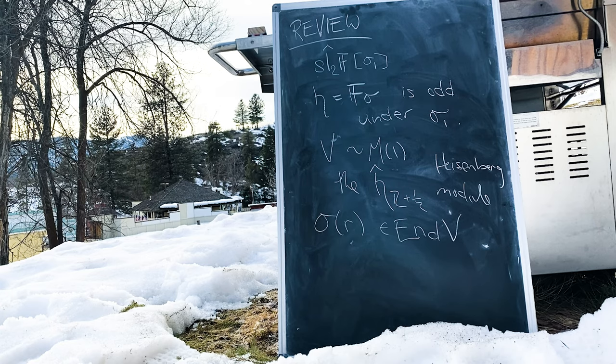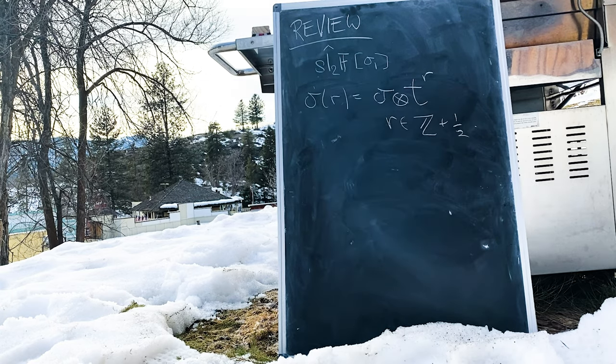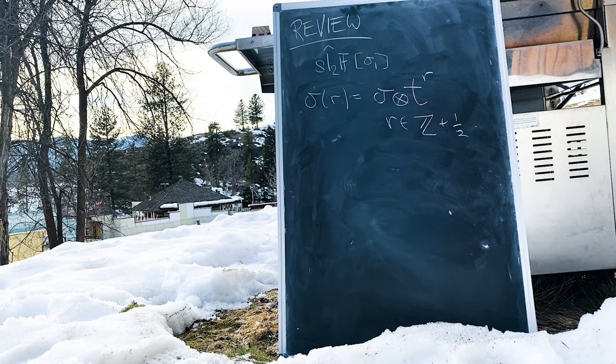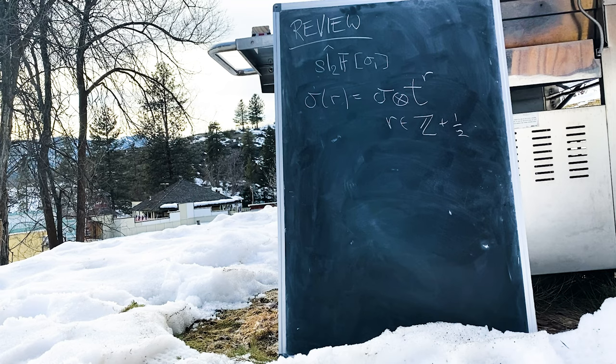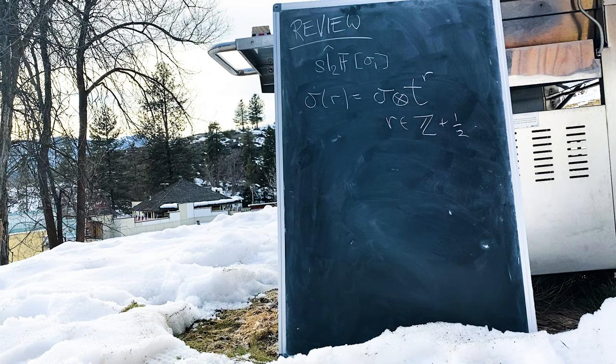The affine algebra then has operators, which we represent as sigma of r, meaning sigma times the formal variable t to the rth power, where r is an integer shifted by one-half. The twisting on the field then sends both sigma and t to the one-half to minus themselves, leaving combinations like sigma of r invariant, which defines, of course, our twisted affine algebra.